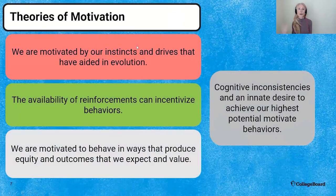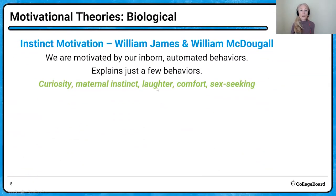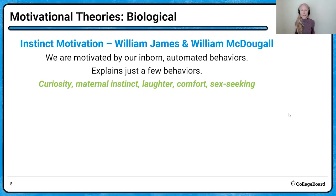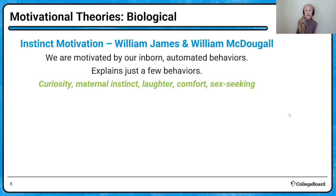So, theories of motivation — we're going to talk about all different sorts of theories. We're going to start with the instinct motivation theory put forth by William James and McDougal. In this case, we are motivated by inborn automated behaviors, just like instinctual behaviors, and this only explains a few behaviors — curiosity, maternal instinct, laughter, comfort, and even sex-seeking behaviors.